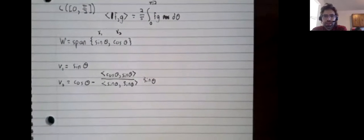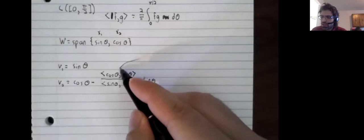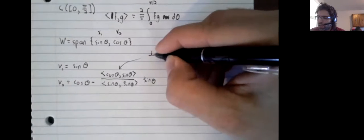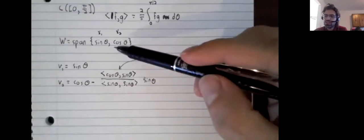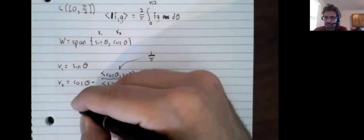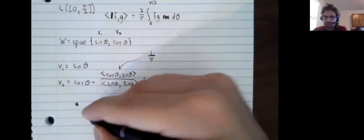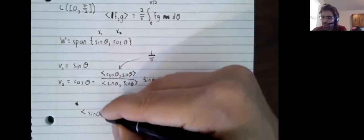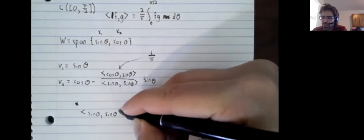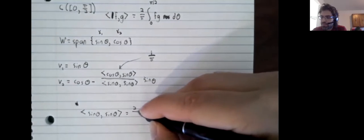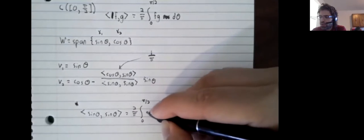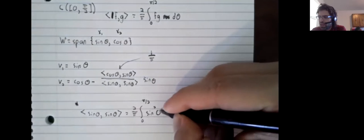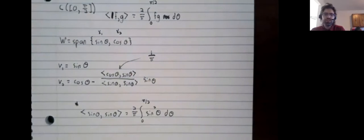And now I am going to wave my hands a little. The inner product of cosine and sine we already computed back when we were checking whether this is an orthogonal basis. The inner product of sine with itself is two divided by pi integral from zero to pi over two of sine squared of theta d theta.